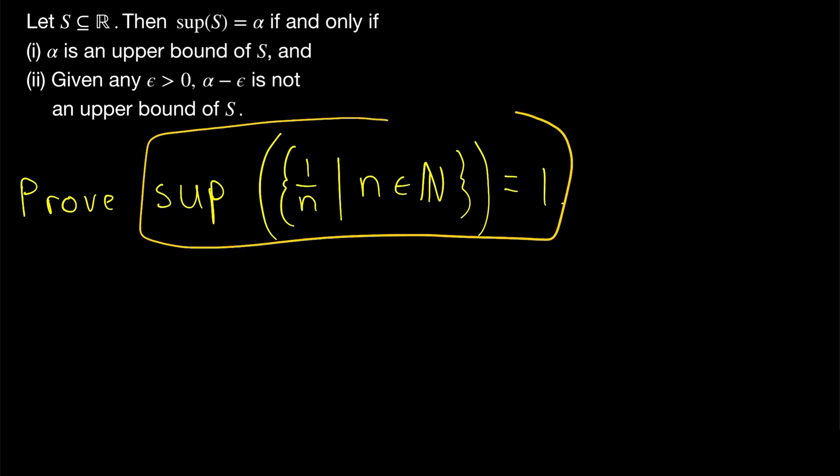Quickly, why would we suspect that the supremum of this set is equal to 1 in the first place? Well, the elements of the set are just reciprocals of natural numbers. And we can see, clearly, the elements are just going to get smaller and smaller after the maximum 1 over 1.